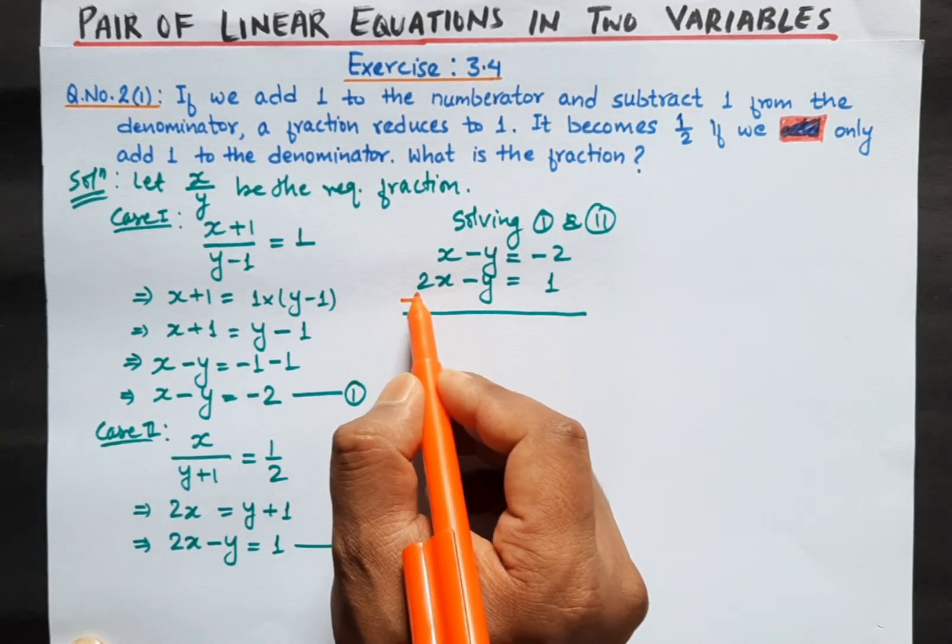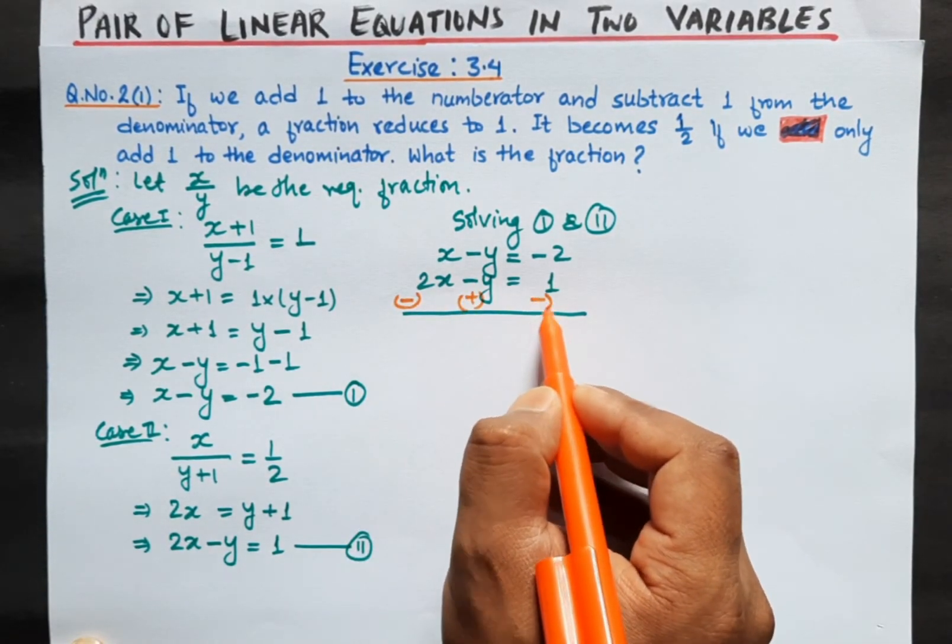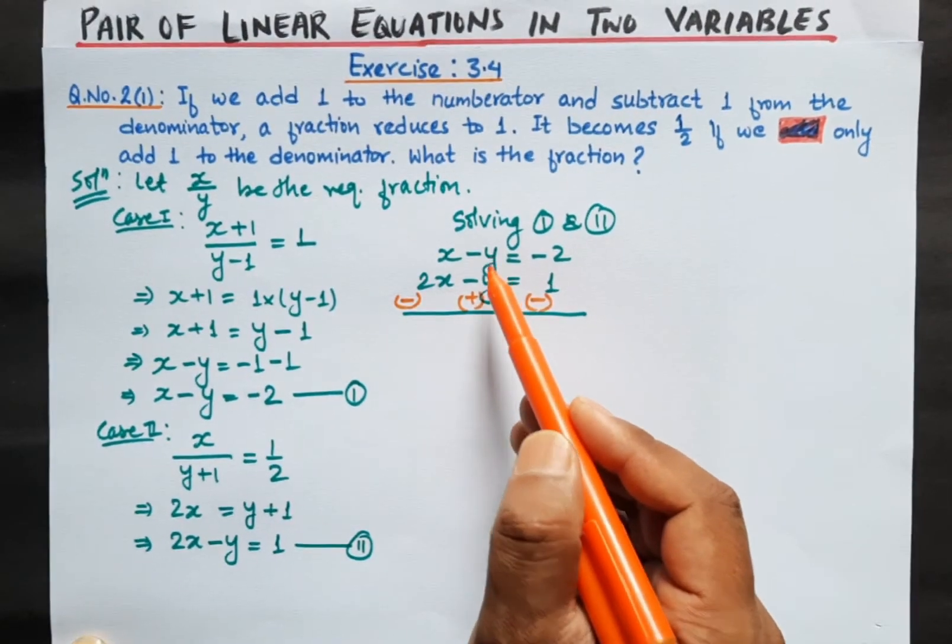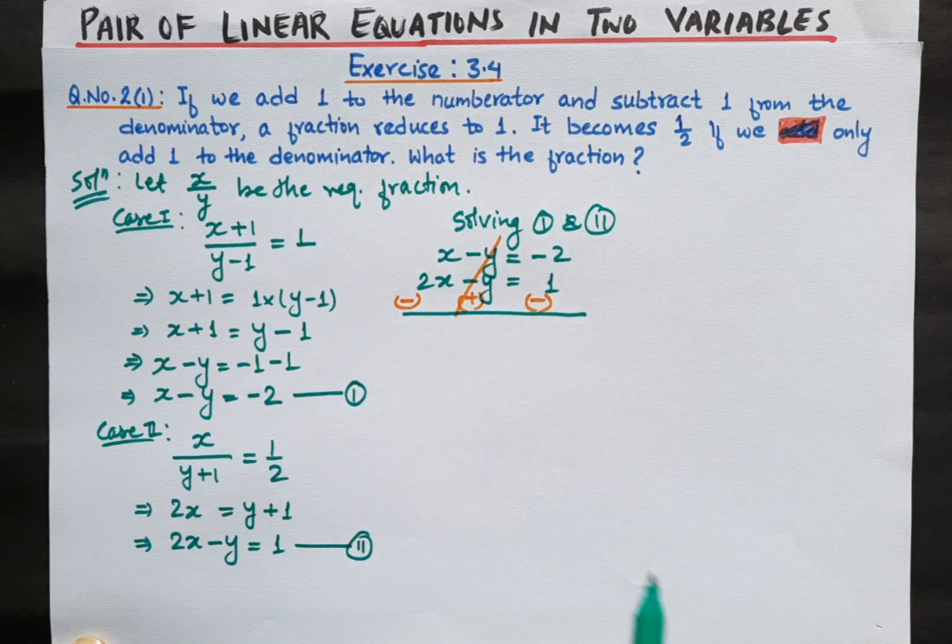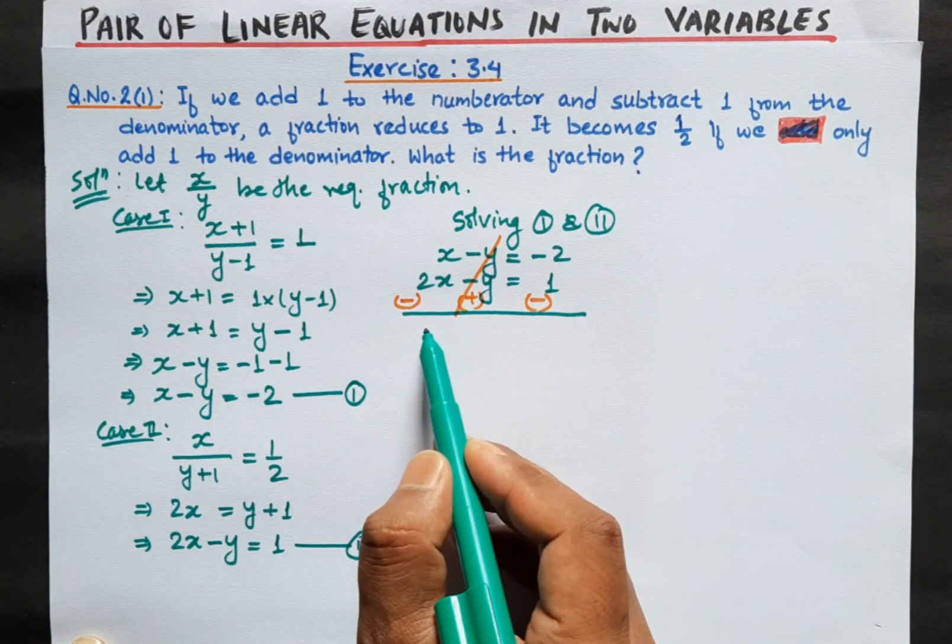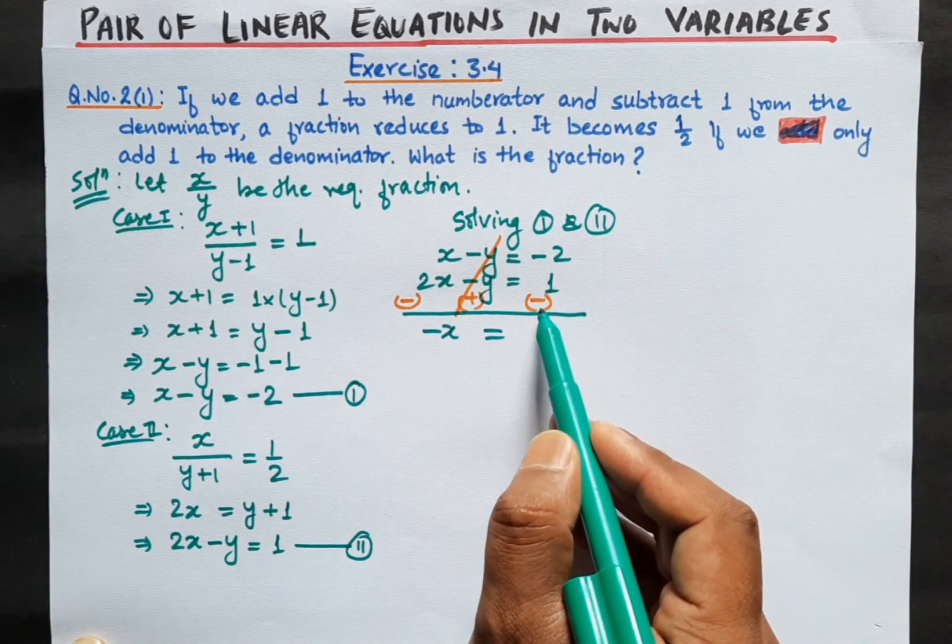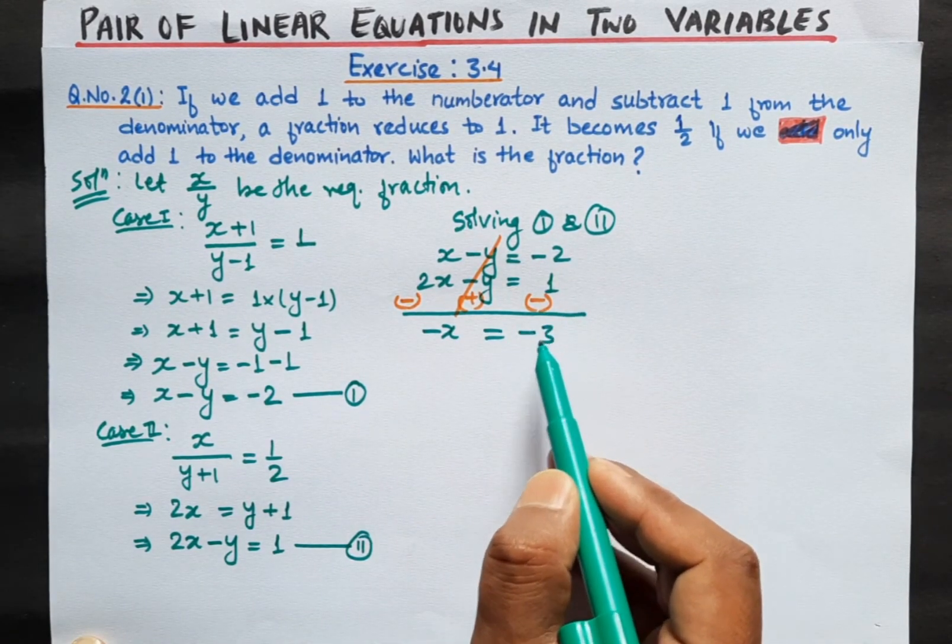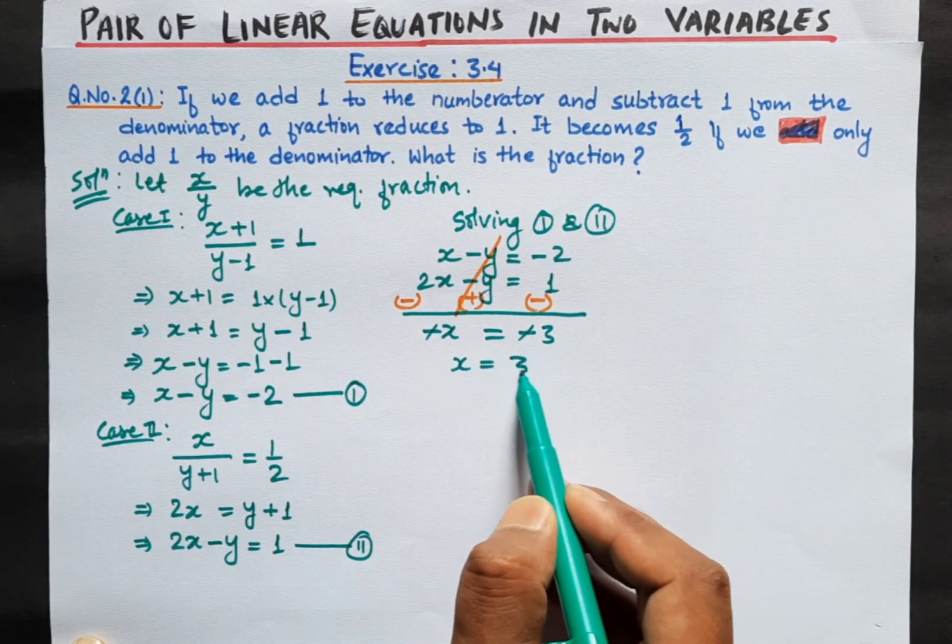We have to change the signs: this becomes minus, this minus becomes plus, and this plus becomes minus. Now minus y plus y equals zero and cancels. We have x minus 2x equals minus x, and minus 2 minus 1 equals minus 3. The minus signs cancel, so x equals 3.